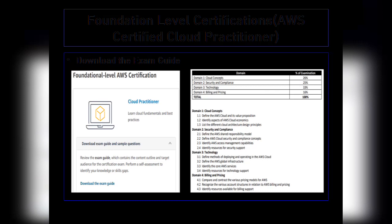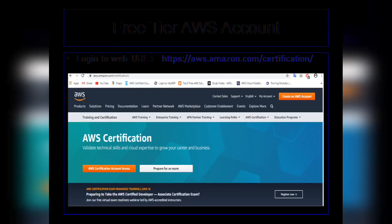The Technology domain basically evaluates you on the methods of deploying and operating in the AWS cloud, as well as how well you understand the core AWS services when you choose to deploy your application in AWS. The last domain is Billing and Pricing, which contributes 16 percent of its weightage in the exam and evaluates you on the various pricing models provided by AWS.